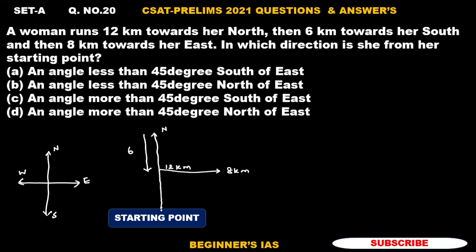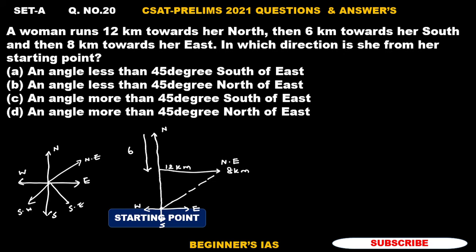Take the starting point as a reference. From this reference, east is here, north is here, west is here, and south is here. So the direction she is in is nothing but north-east. This is north-east, this is south-east, this is south-west, and this is north-west. Here she is towards the north-east.